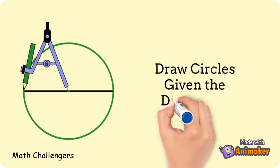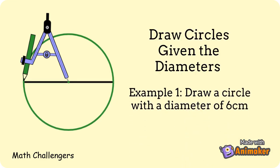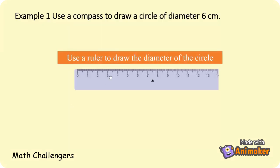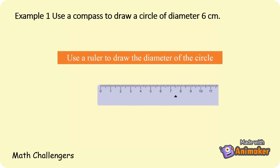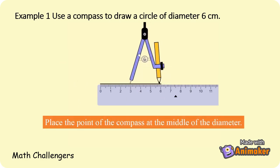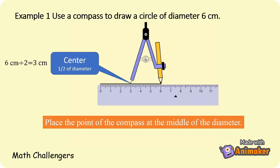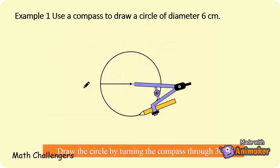Now let us see how to draw circles if diameters are given using a compass. Example number 1: Draw a circle with a diameter of 6 cm. Use a ruler to draw the diameter of the circle. Place the point of the compass at the middle of the diameter — that will be the center of the circle. Draw the circle by turning the compass through 360 degrees.